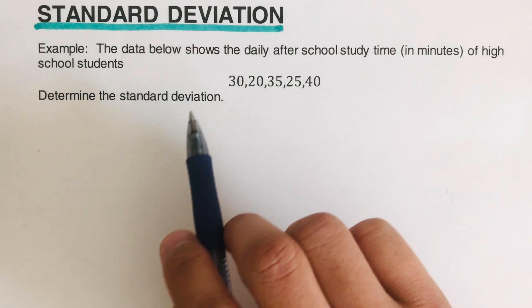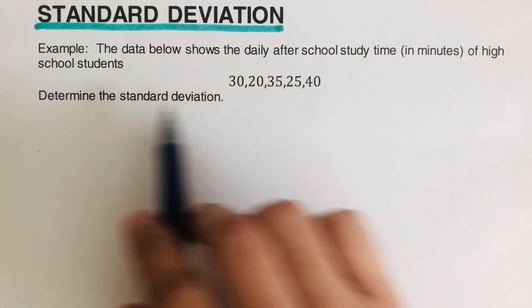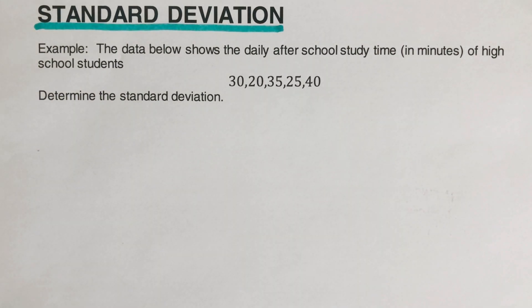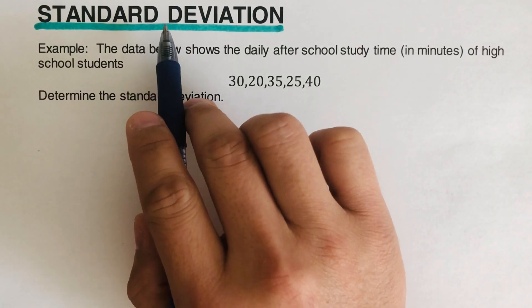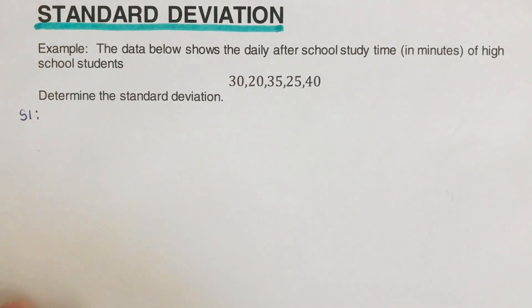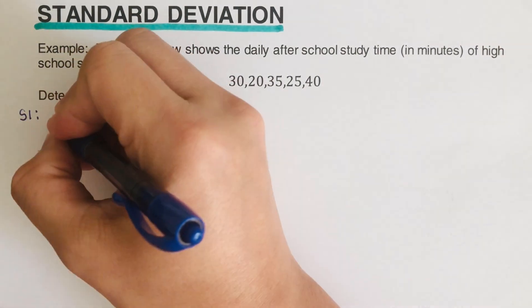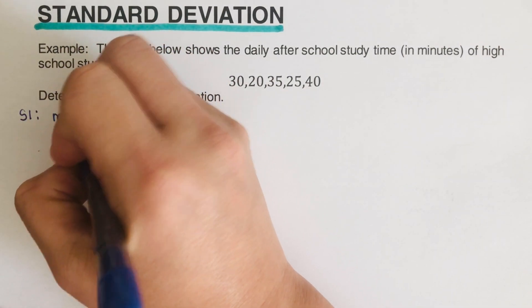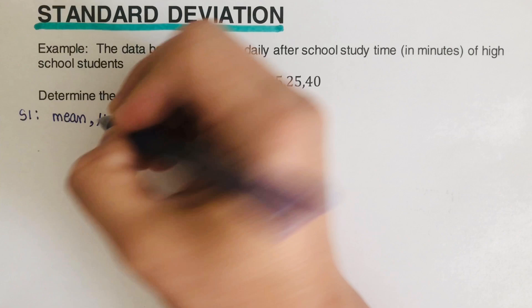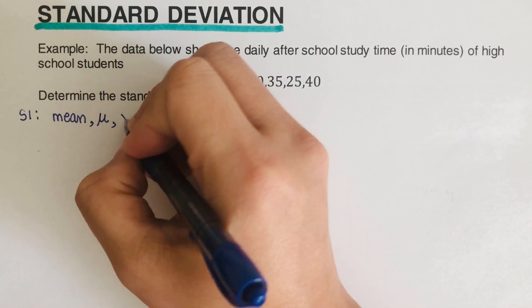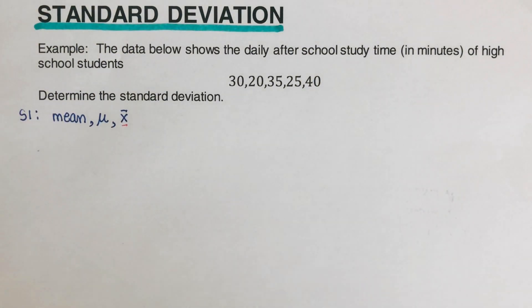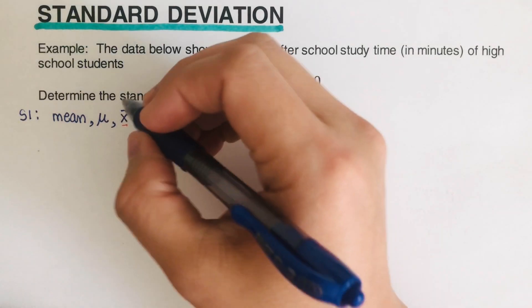The data below shows the daily after-school study time in minutes of high school students. We need to determine the standard deviation. The first step is to determine the mean. The formula for the mean — some books use mu as a symbol, others use bar x. For this class we're going to use bar x. So the formula for the mean is